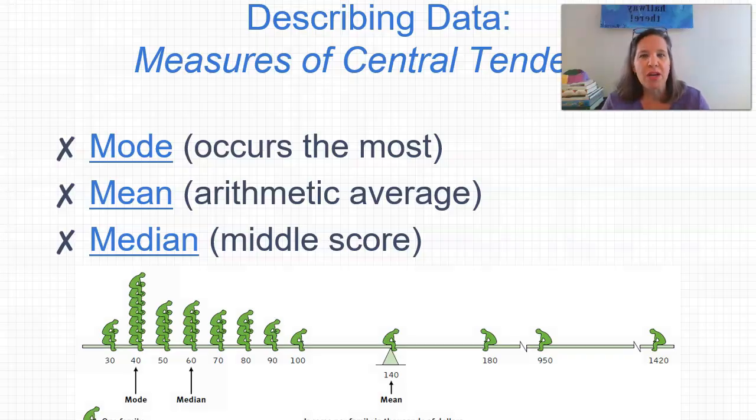So describing our data. Measures of central tendency. So we have mode, which is the most frequently occurring number. We have mean, which is our mathematical average. And then we have median, which is our middle score. The score that falls directly in the middle of all of our data points. So there's this nice graphic here on the screen that shows you our mean, our median, and our mode.